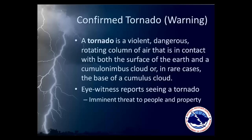It is important to note a difference between a forecast tornado warning and a warning with a confirmed tornado. A confirmed tornado is a violent, dangerous, rotating column of air that is in contact with the ground, as explained in Section 1. In the case where we have a confirmed tornado, we have an eyewitness reporting it. This, of course, is an imminent threat to people and property.